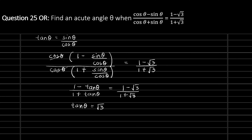Now tan theta equals root 3 for which angle? For 60 degrees — root 3 equals tan 60 degrees. Therefore theta equals 60 degrees. So we have found the acute angle theta whose value is 60 degrees when (cos theta minus sine theta) upon (cos theta plus sine theta) equals (1 minus root 3) upon (1 plus root 3). That's how you solve this question.